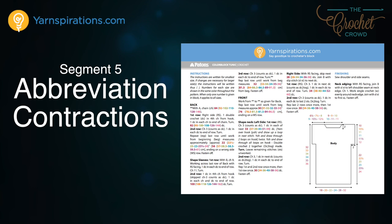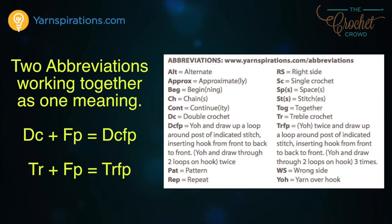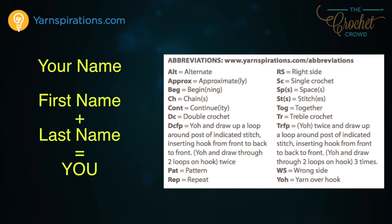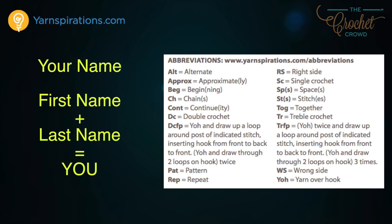Now let's move along to abbreviation contractions, where two meanings come together to form one meaning. The Cablework Afghan is a great example of an abbreviation key that has all of the instructions on how to do the stitch. You will notice that double crochet front post and treble crochet front post are abbreviations sandwiched together as one — they are contracted together and work in unison. Think about your name: most of us have a first and last name and together they define us. Similarly, some crochet terms need to work together to define what they are in order to be specific.